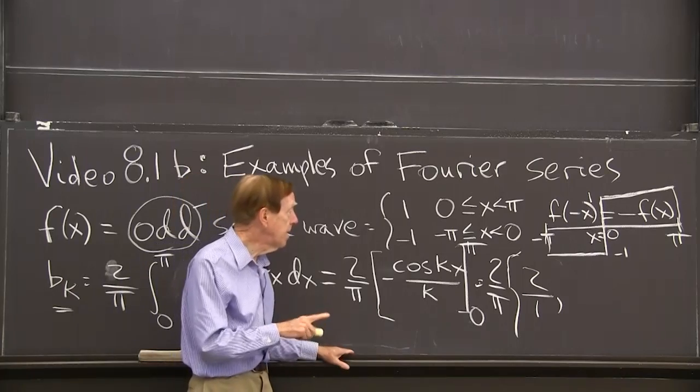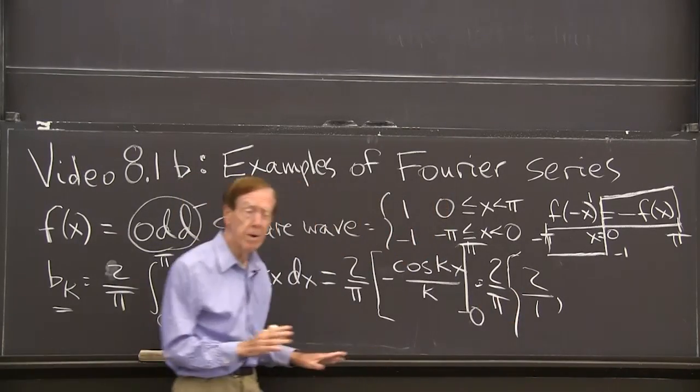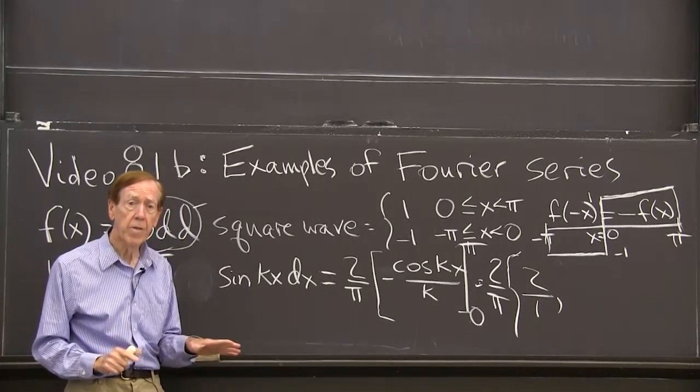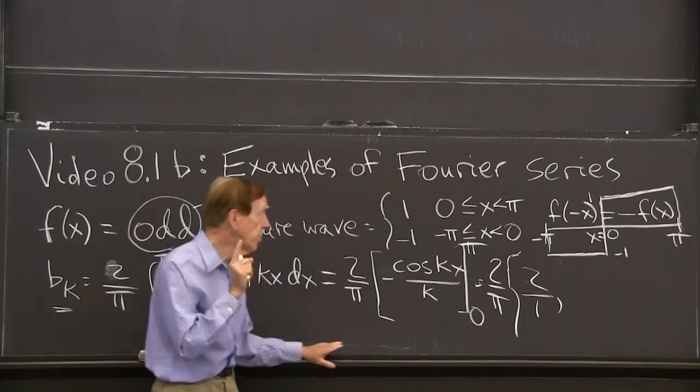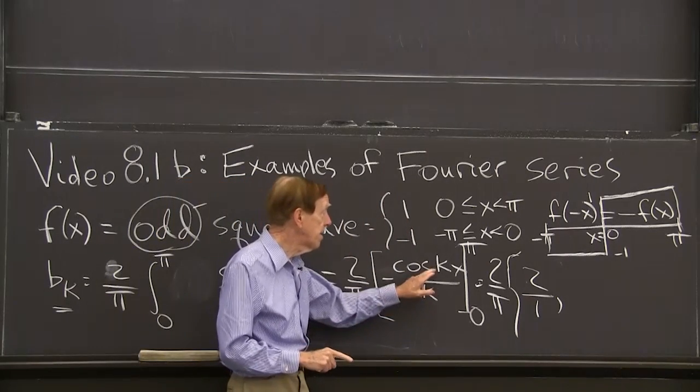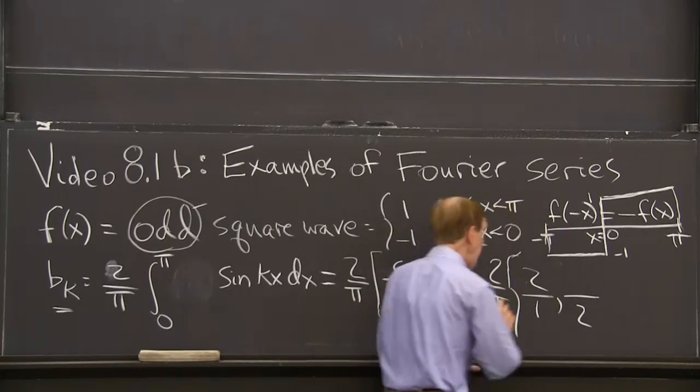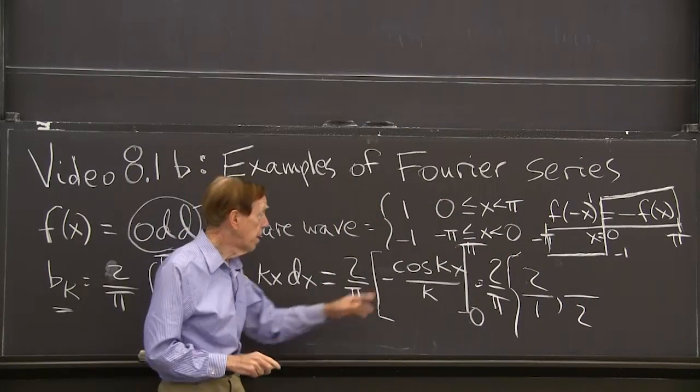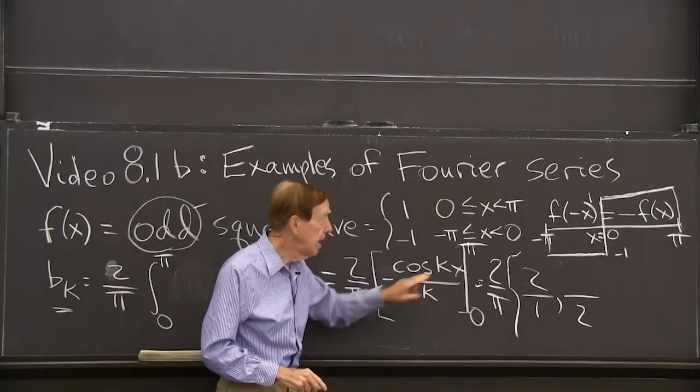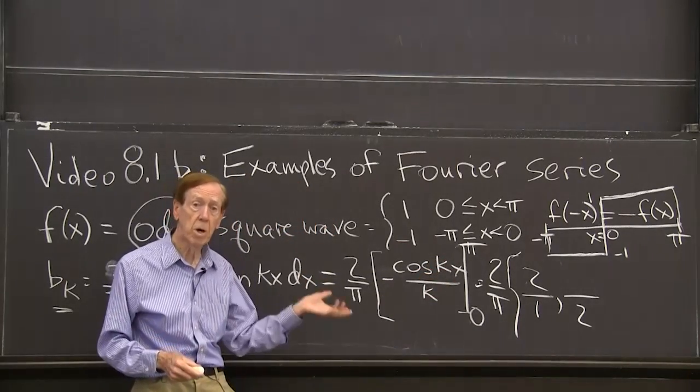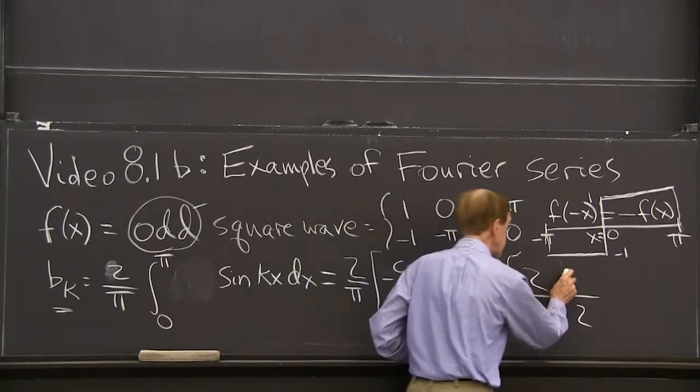When k is 2, so this is 4 over pi I figured out as the first coefficient. The coefficient b_1 is 4 over pi. The coefficient b_2, now if I take k equal to 2, I have a 2 down below. But above, I have a 0. Because the cosine of 2 pi is the same as the cosine of 0. When I subtract, I get nothing. So that's 0.